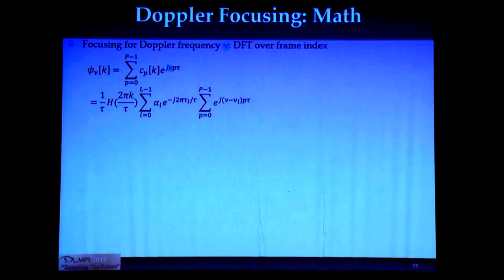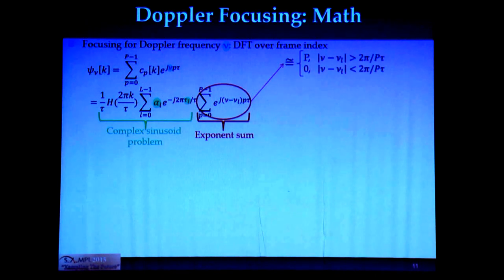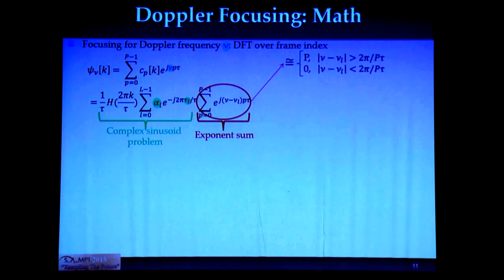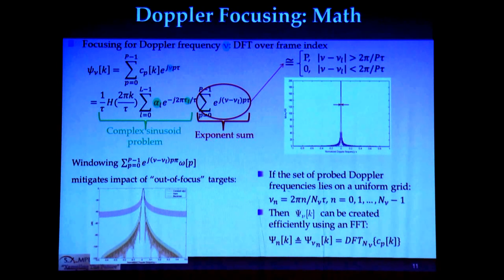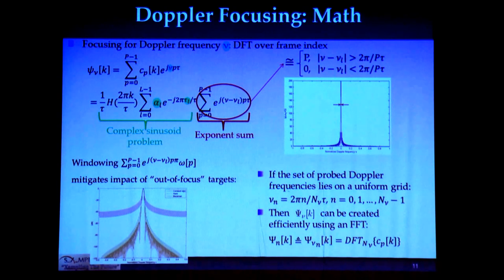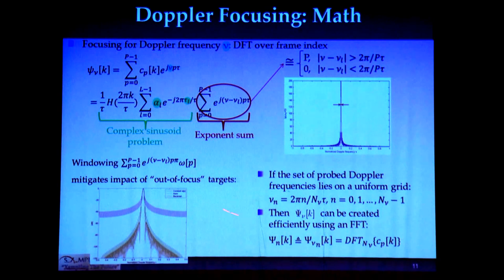The actual Doppler focusing operation is basically a frequency-domain beamformer. You beamform the sample coefficients and what comes out is part of the degrees of freedom in green and an exponent sum in red. This exponent sum is a good approximation for a delta function, which actually blocks out targets with unfocused Doppler frequencies — they are simply attenuated very strongly. It's shown in linear scale, and if this attenuation is not strong enough, you can use standard signal processing windowing techniques to reduce sidelobes.